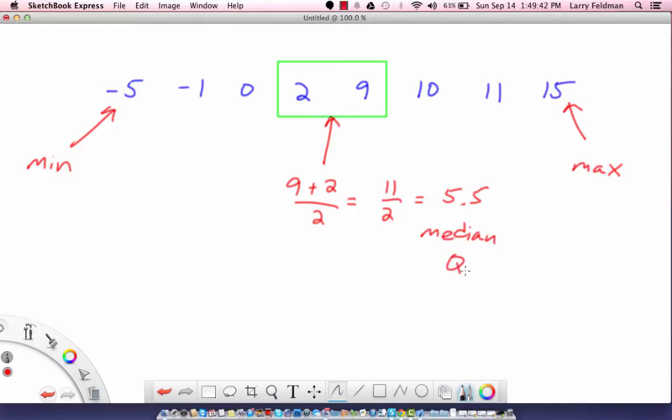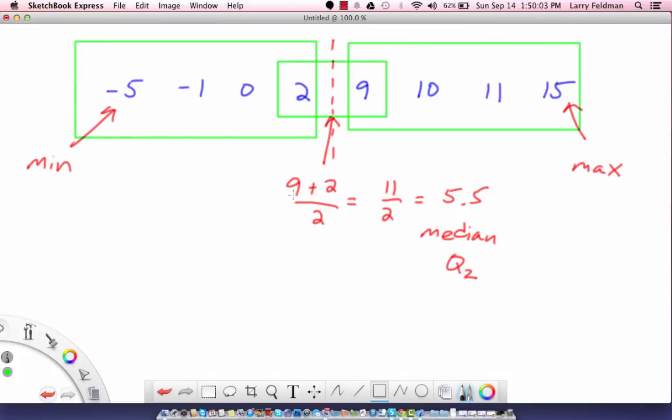So this is 11 over 2, which is 5.5. This is the median or q2. Then we draw a dashed line down here, and we want to identify the data to the left of that dashed line and to the right of it. To find q1, we look at the data to the left of this dashed red line. We're now finding the median of this green rectangle, which is the average of those two numbers. So we have negative 1 plus 0 over 2, which is negative one half. That's q1.